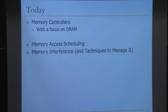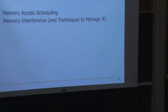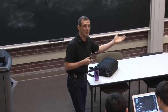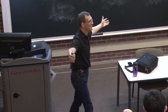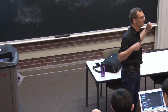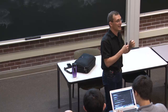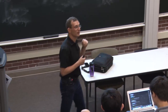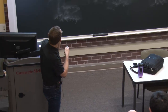Today we'll go into memory controllers with a focus on DRAM, but a lot of the concepts are applicable to other technologies as well. Whenever you have some kind of long-latency memory that you need to schedule operations to — banked, with multiple channels, with some dimensional structure — you need to design a memory controller like this. Very large caches also have memory controllers; IBM Z systems have L4 caches on the order of 192 megabytes using embedded DRAM. We'll talk about memory access scheduling and memory interference.